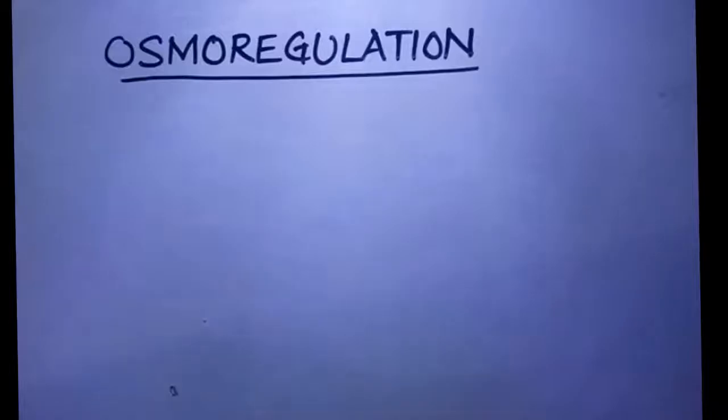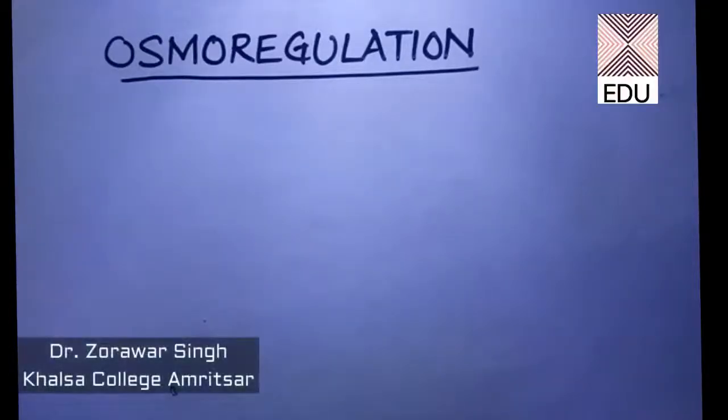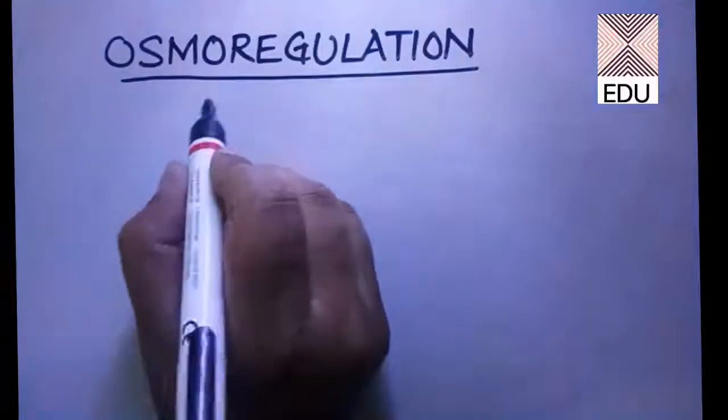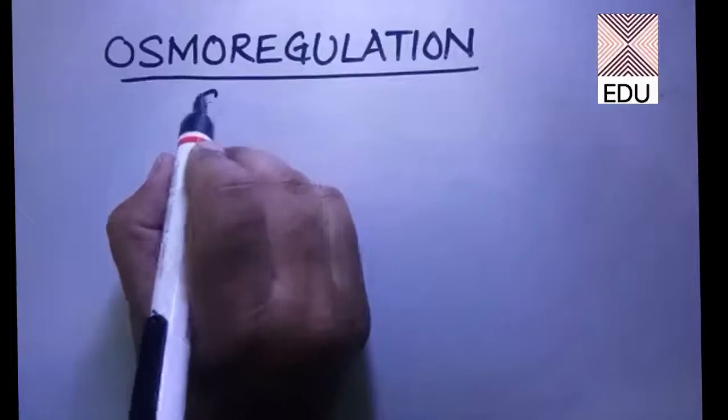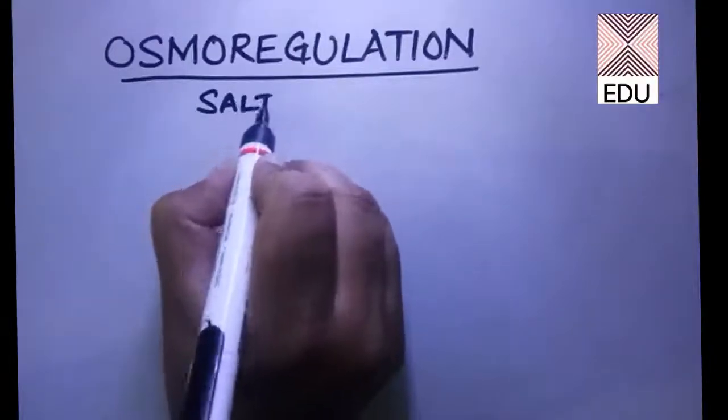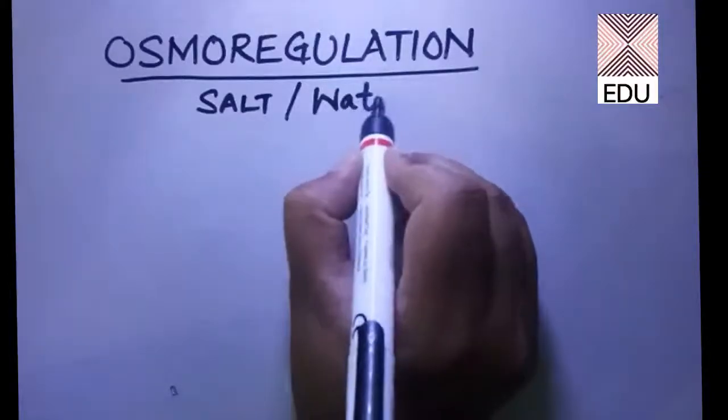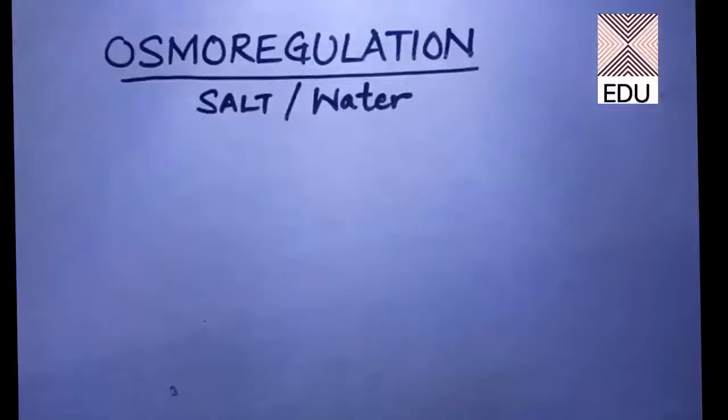Now we are discussing the process of osmoregulation in amoeba. As we know, osmoregulation refers to the regulation of salt and water. So the regulation of salt and water is called osmoregulation, and this is a very important phenomenon in amoeba.